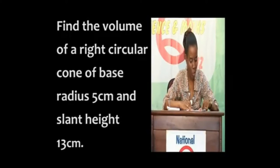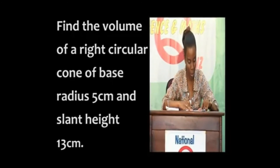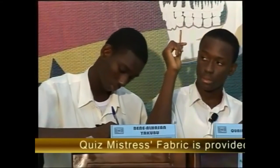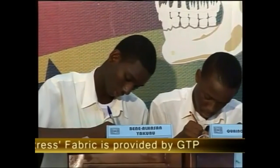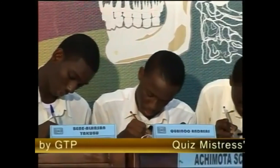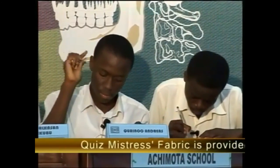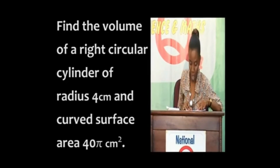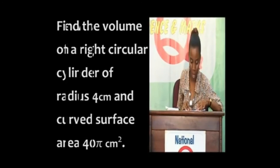At Achimota School, find the volume of a right circular cone of base radius 5 centimeters and slant height 13 centimeters. You may leave your answer in pi. Yes, Andreas. 100 pi cubic centimeters. Yes. Then: find the volume of a right circular cylinder of radius 4 centimeters and curved surface area 40 pi centimeters squared. You may leave your answer in pi. Nicholas. 160 pi cubic centimeters. That's right.